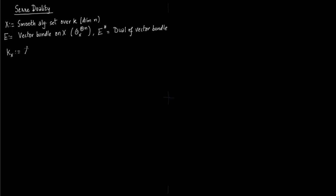So you know this canonical sheaf. This is the exterior product of ω1 over the curve x, where n is the dimension of the curve x. Or you can say smooth algebraic set x.